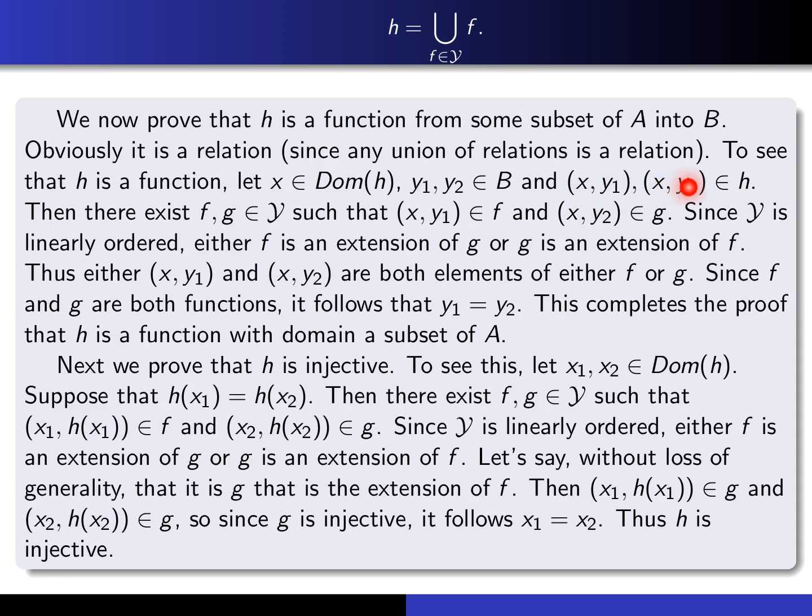Similarly, to say x, y2 is in H means there exists G in Y such that x, y2 is in G. We use the fact that Y is linearly ordered: F is either related to G or G is related to F, meaning one is an extension of the other. Therefore these ordered pairs are both elements of whichever function is the extension. Since that function is a function, it follows that y1 equals y2, which proves H is a function with domain some subset of A.